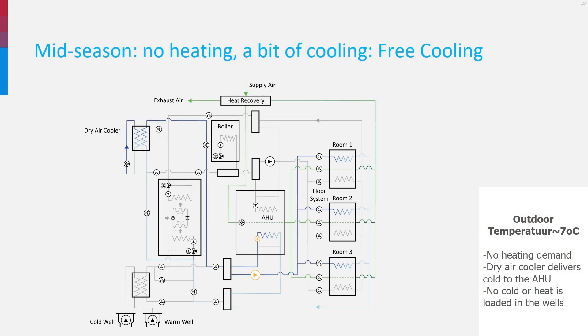In many office and educational buildings, there is already cooling needed in the mid-season. Although it is still cold outside, solar gains and internal heat loads cause a surplus of heat. In this case, the dry air cooler delivers cold to the air handling unit and to the floor cooling if needed. This is all free cooling.